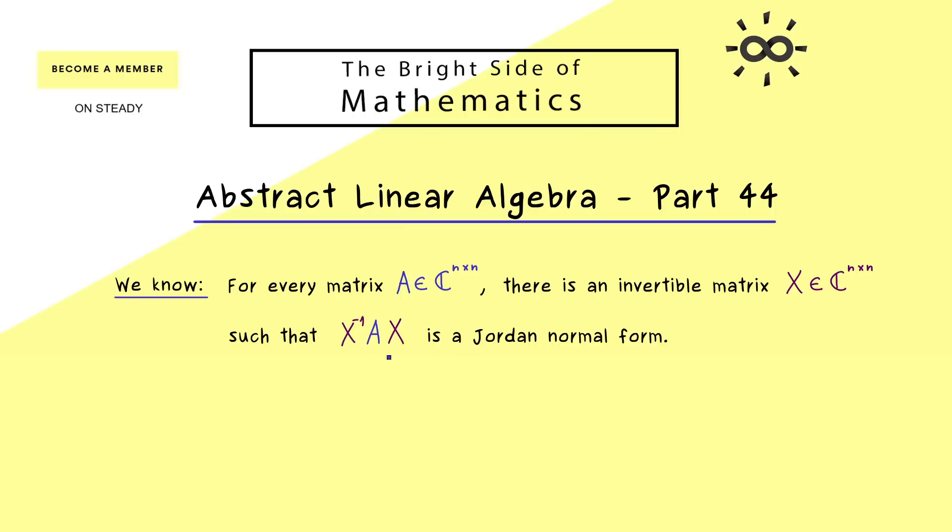And we have already learned that in the columns of the matrix X we put generalized eigenvectors of the matrix A. For that reason, in the Jordan Normal Form we always find the eigenvalues of A on the diagonal. And indeed how often one eigenvalue is repeated on the diagonal is given by the algebraic multiplicity. So if you know all the eigenvalues of A and the corresponding algebraic multiplicities, you know the whole diagonal of the Jordan Normal Form.